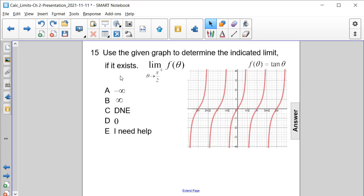Use the given graph to determine the indicated limit if it exists. The limit of f of theta as theta approaches pi over 2 from the right.